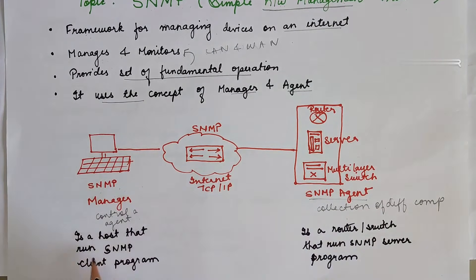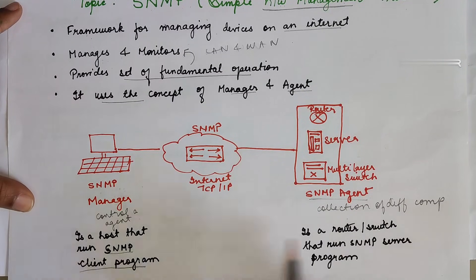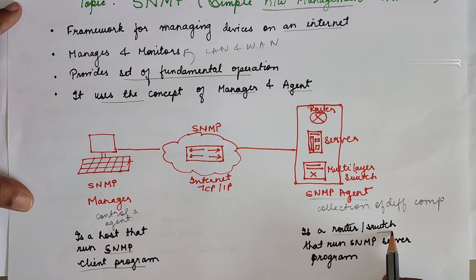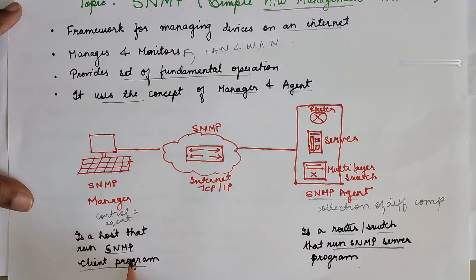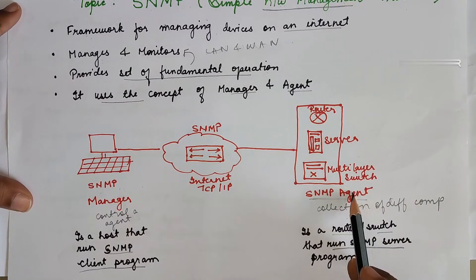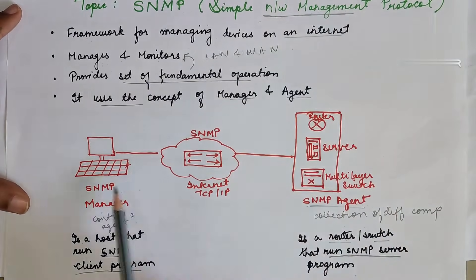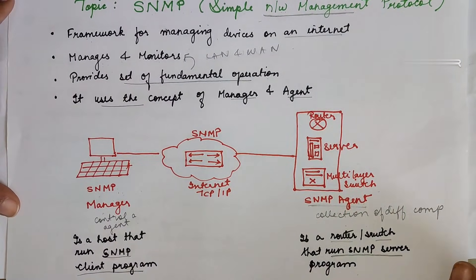One more thing to remember: it is a host that runs the SNMP client program, whereas the server — which can be routers, switches, or servers — runs the SNMP server program. The client, that is the SNMP manager, sends requests to check the SNMP agent — for example, whether there is any fault or connection issue in the network. In this way, the network is managed with the help of the manager and the agent.